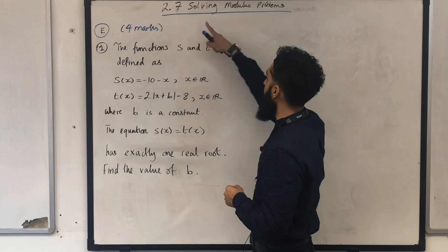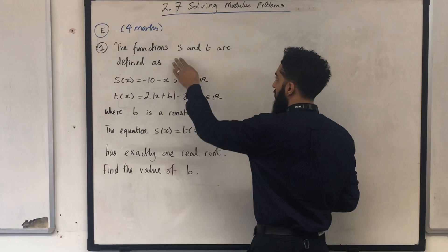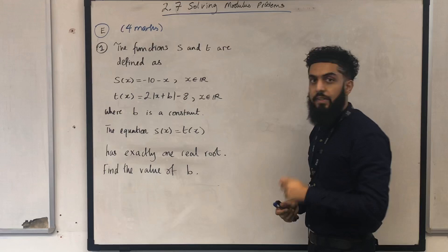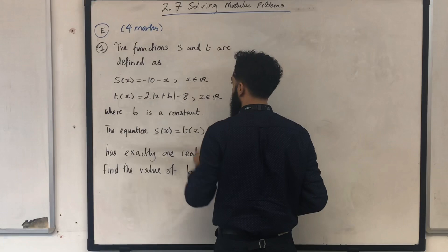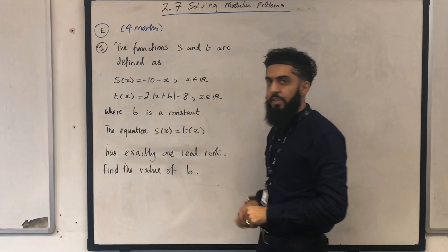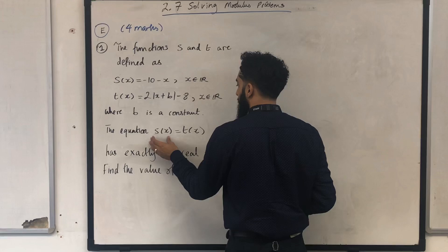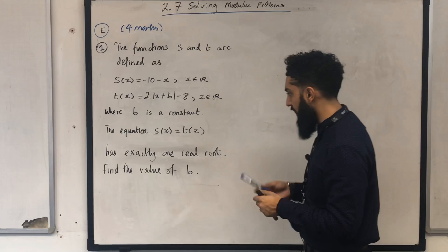Here is an exam question worth four marks. The functions s and t are defined as s of x equals minus 10 minus x, where x is a real number. t of x equals 2 modulus of x plus b minus 8, where x is a real number and b is a constant — b could be negative or positive. The equation s of x equals t of x has exactly one real root. Find the value of b.